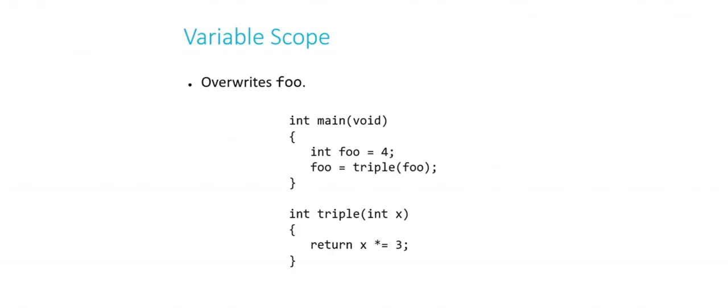It says return 4 times 3, or whatever variable gets passed in times 3. And then we assign the return value of triple to foo again. So this actually would overwrite foo. This is the only way to do this with local variables.